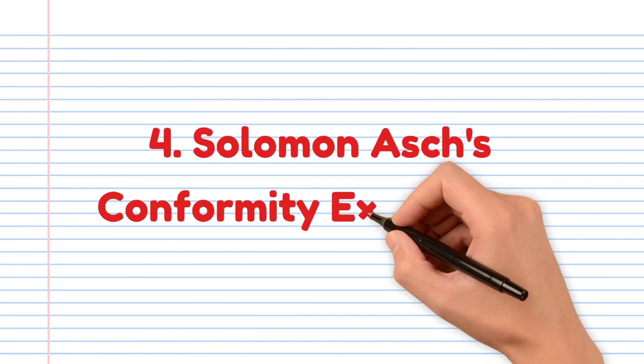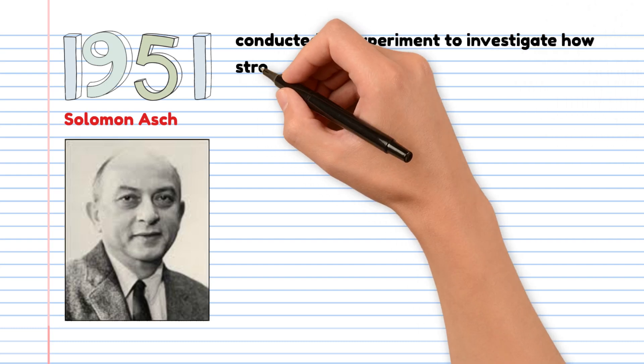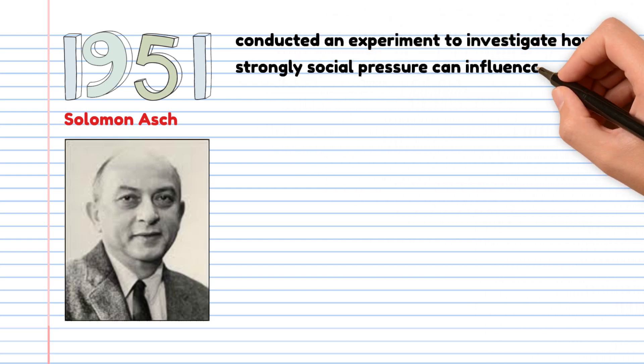Solomon Asch's Conformity Experiment. In 1951, Solomon Asch conducted an experiment to investigate how strongly social pressure can influence individual beliefs.